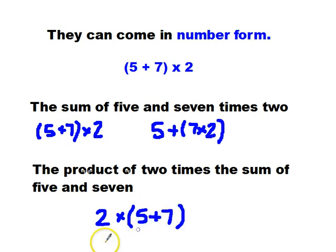Remember, the fact that mine's written a little backwards from that doesn't matter because we're multiplying. 12 times 2 and 2 times 12 will both give me 24.